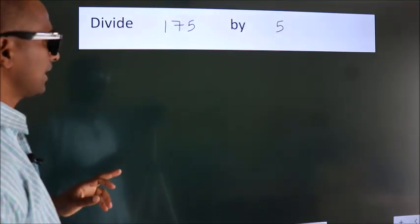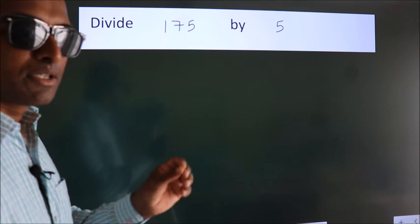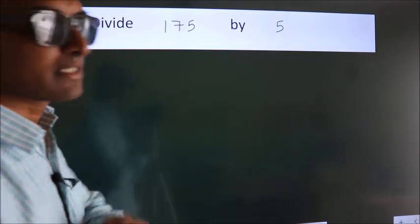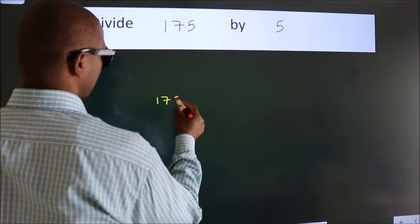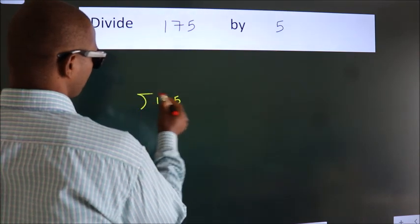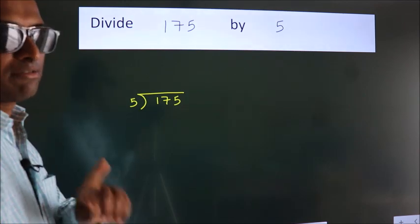Divide 175 by 5. To do this division we should frame it in this way: 175 here, 5 here. This is your step 1.